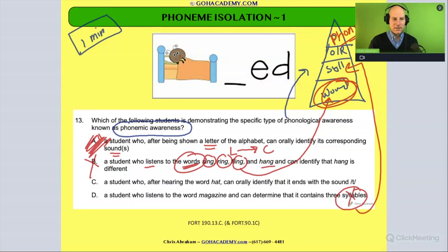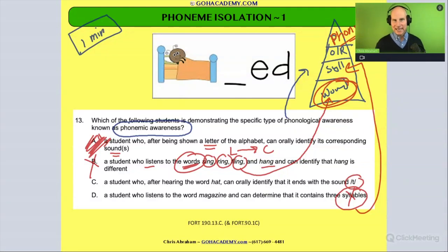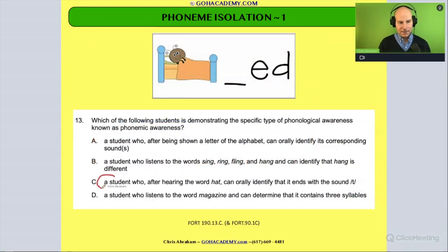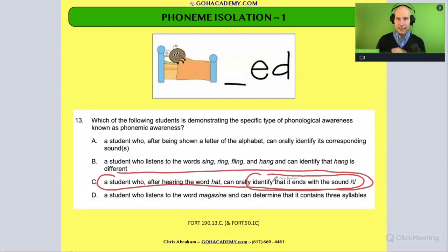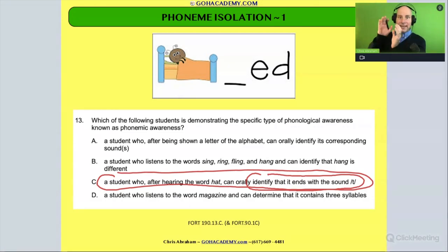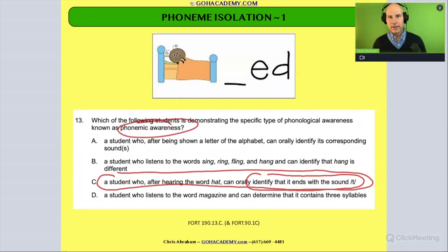The correct answer is C. A student who, after hearing the word 'hat,' can identify its final phoneme — that it ends with the sound T. Think about that activity: they're identifying the end sound, which means they're doing phoneme isolation. Phoneme isolation is identifying the beginning sound, the medial sound, or the end or final sound in a word, and that definitely falls under phonemic awareness.